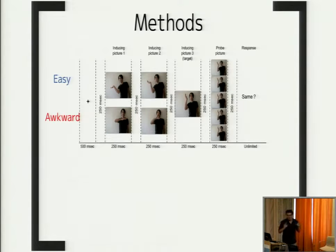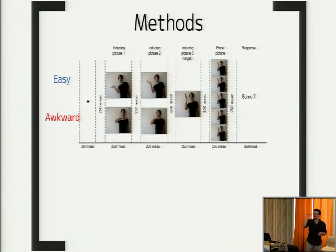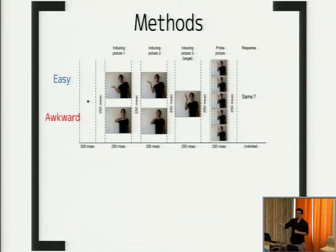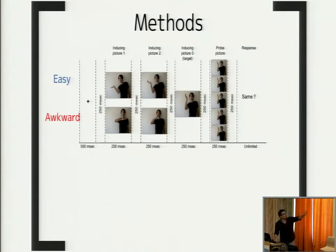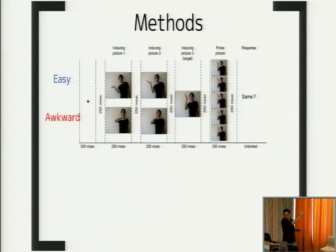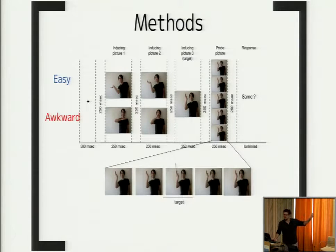Participants saw two kinds of series of three pictures — one series inducing the perception of a movement that would be very difficult to continue along the same trajectory, the other inducing perception of a movement that would be easy to continue. Very importantly, both series end with the exact same target last picture, always showing the hand in the same position. Participants then see a probe picture and must decide whether the probe shows the hand at the very same position as in the target. Probes show the hand displaced either away from or toward the body, labeled as forward or backward probes depending on condition.